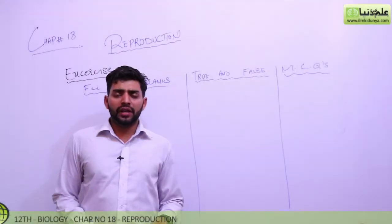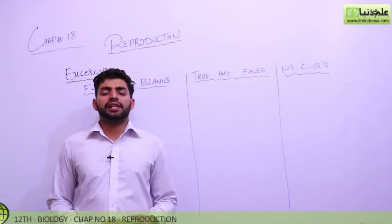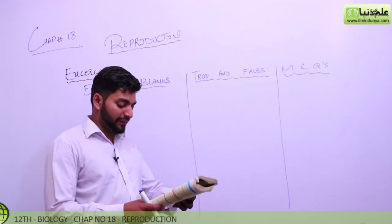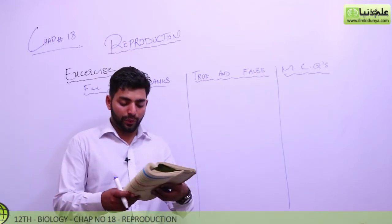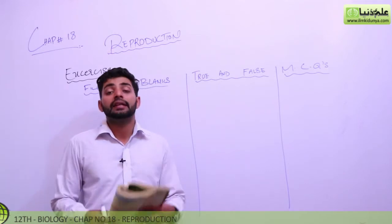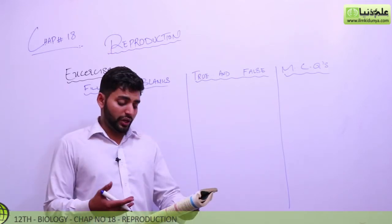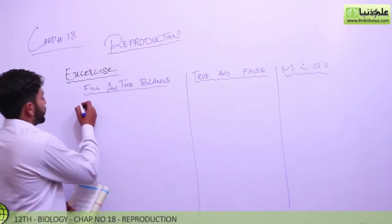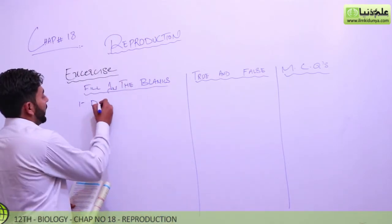This is the exercise of this chapter. We have discussed things about this exercise. At first, we go to fill in the blanks. When you ask the first fill in the blanks, asexual reproduction requires only a single organism. So asexual reproduction is required in a diploid organism. So the answer number one is diploid.